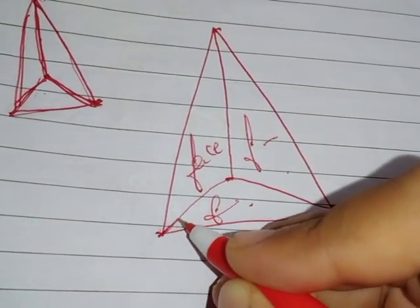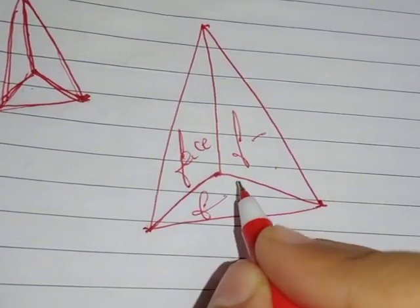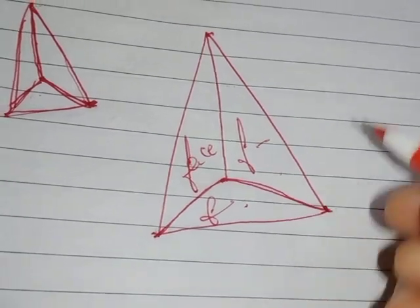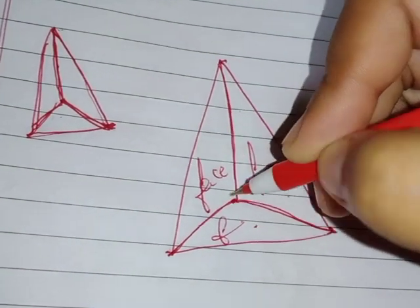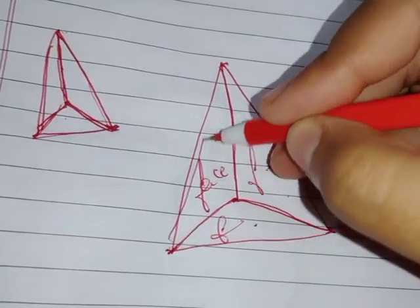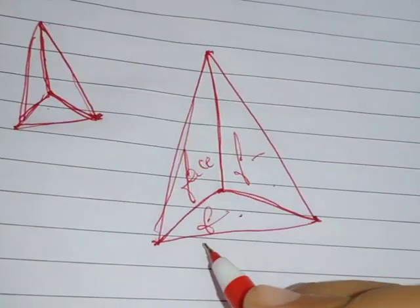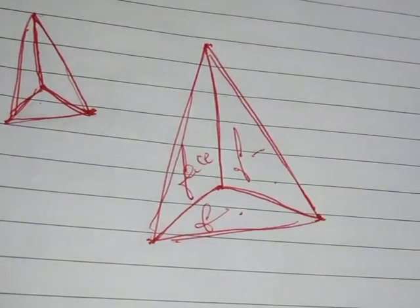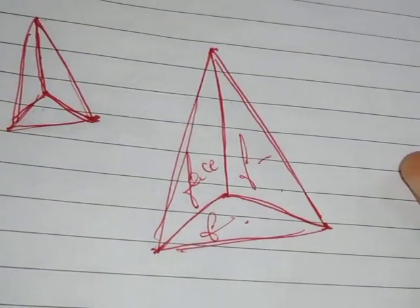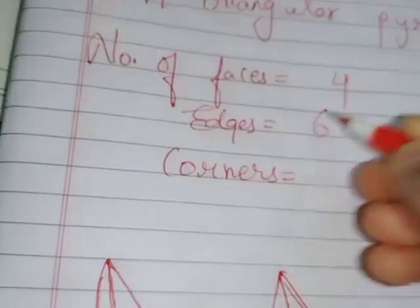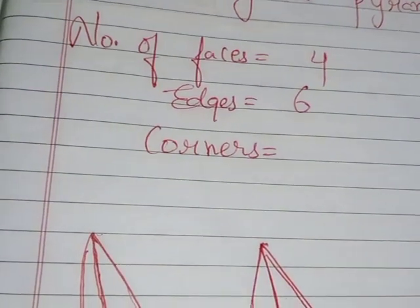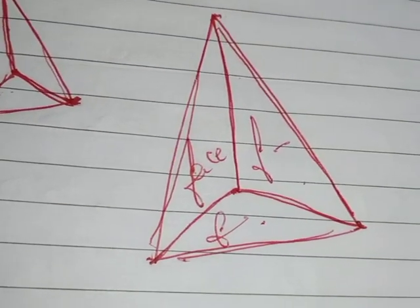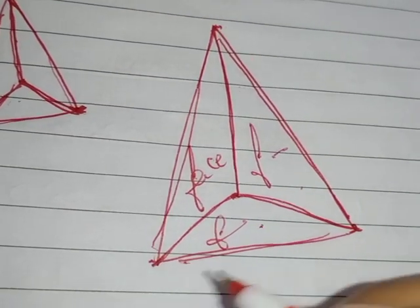There are four faces in the triangular pyramid. Now what about the edges? This is one edge, then the second edge, third, fourth, fifth, and then sixth. So there are six edges in the triangular pyramid.